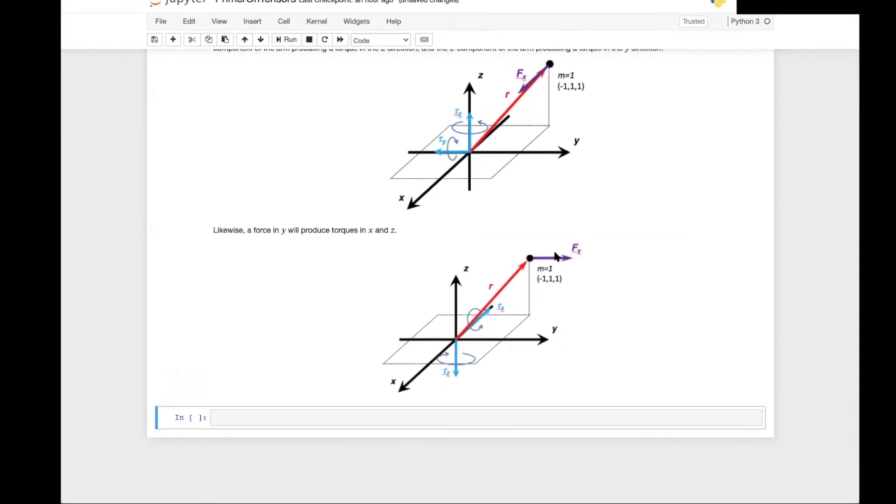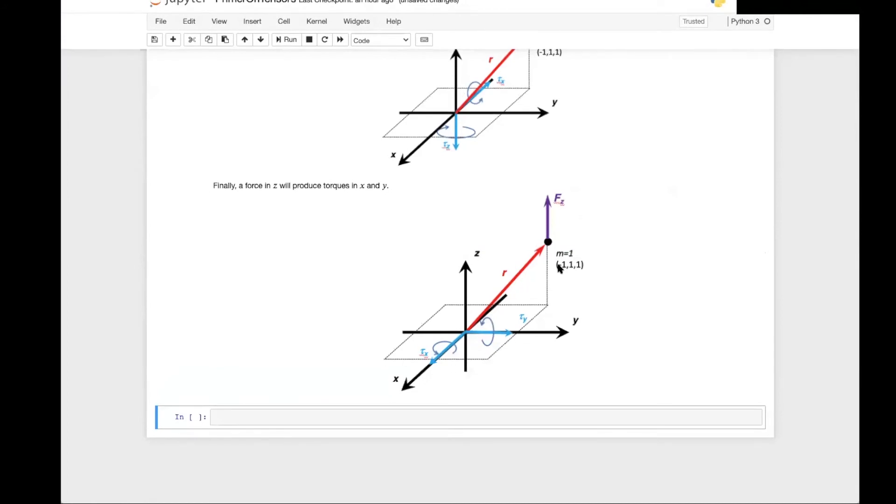Consider now a force in y. The force in y is going to pick the arms in x and z and produce torques in z and x. And finally a force in z is going to pick the arms in x and y and produce torques in the y and x direction respectively.